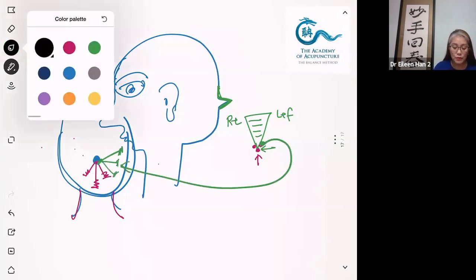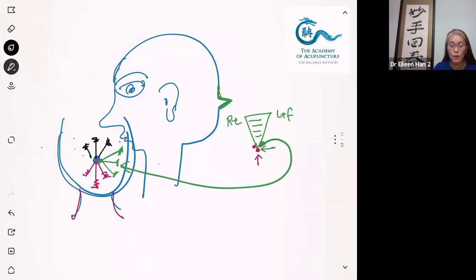In any condition, if you put the needle in here to treat occipital, to treat tailbone pain, it's not working. You have to needle from the bottom to the top to treat. Otherwise it's not working.